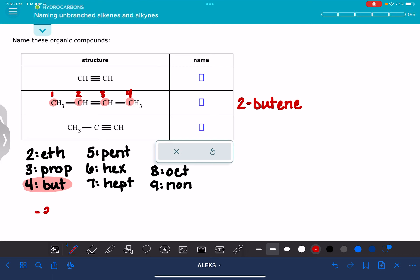This ene suffix we use when there is a carbon-carbon double bond present, alkene. And if we have a triple bond, which we're going to do next, we're going to use the yne suffix. That's for alkynes or carbon-carbon triple bonds.